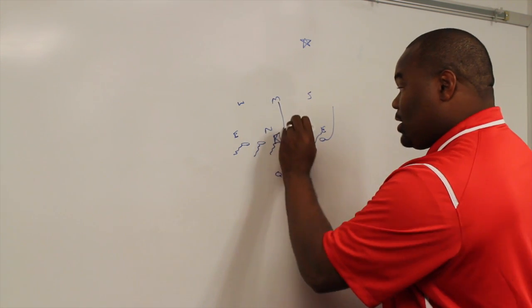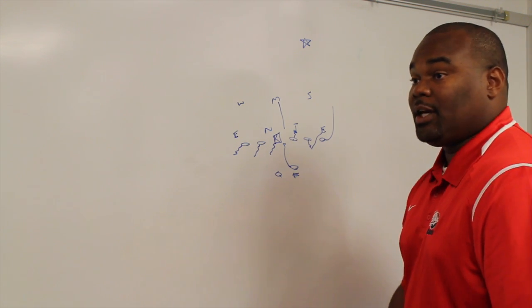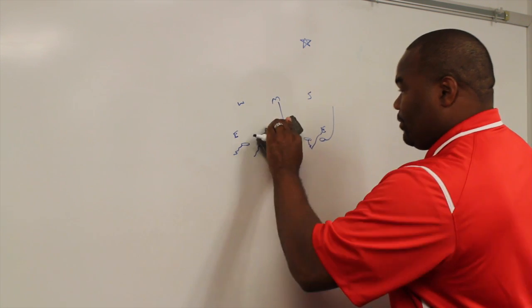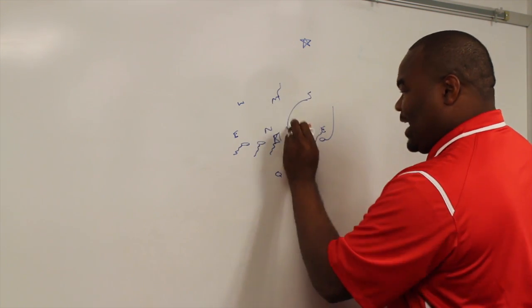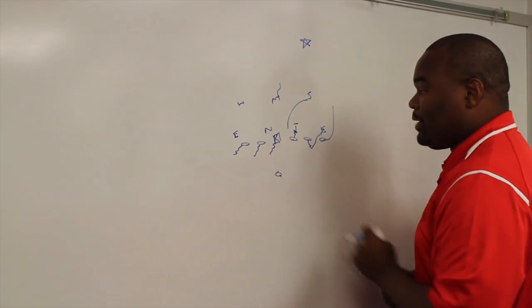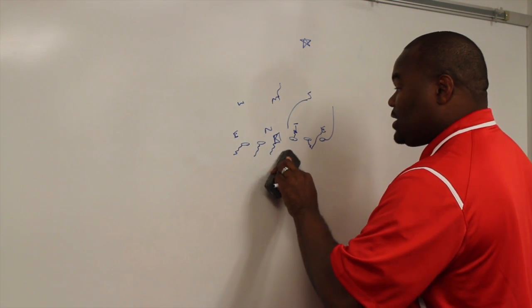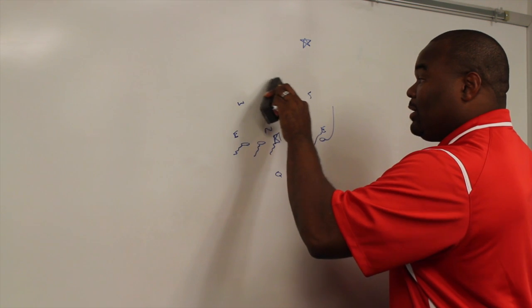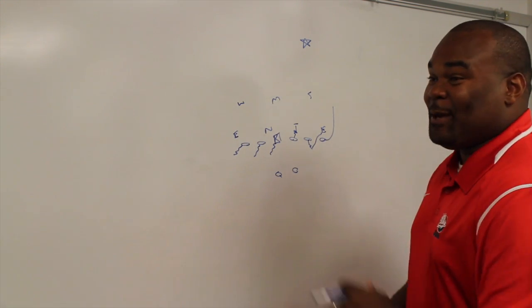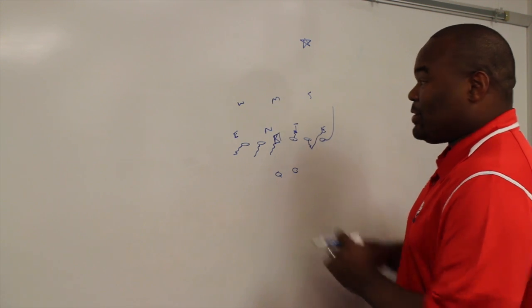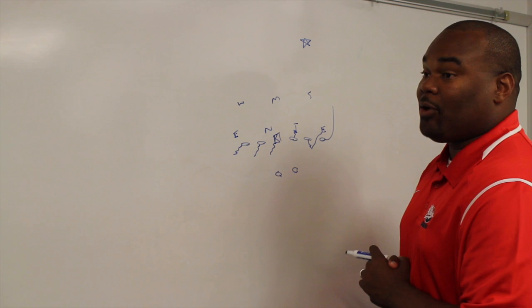The running back here is going to be responsible for any blitz on the man side. If this Mike comes, that's the responsibility of the running back. Whatever way they form up front, that would be the responsibility of the running back. But what we tell the running back is that protection starts from the inside out. So that's the first principle that he must know. If you don't understand anything else, protection starts from the inside out. So if the mic and Sam both come, the mic is the inside of the two, he's the priority.